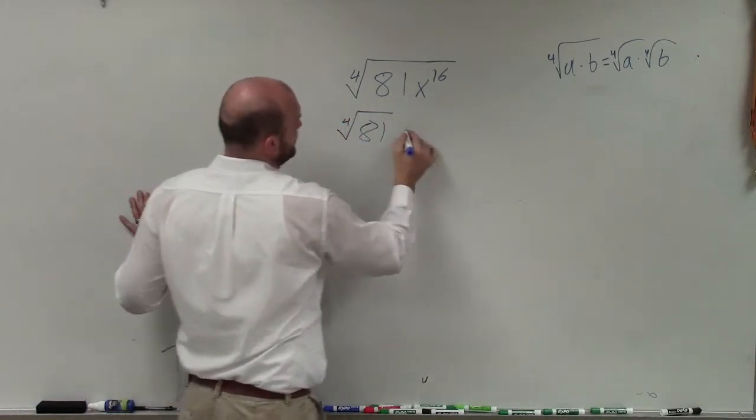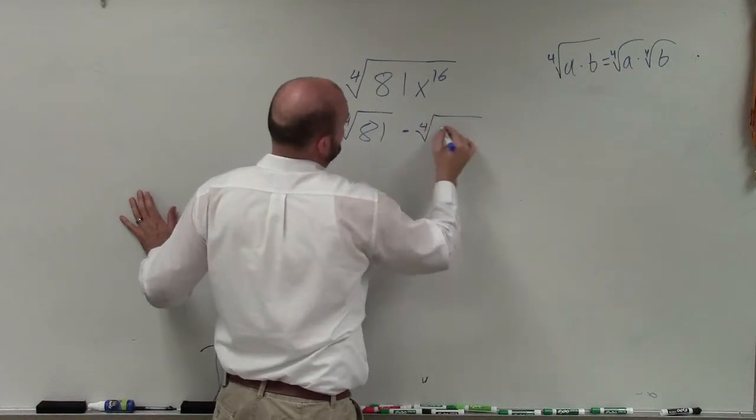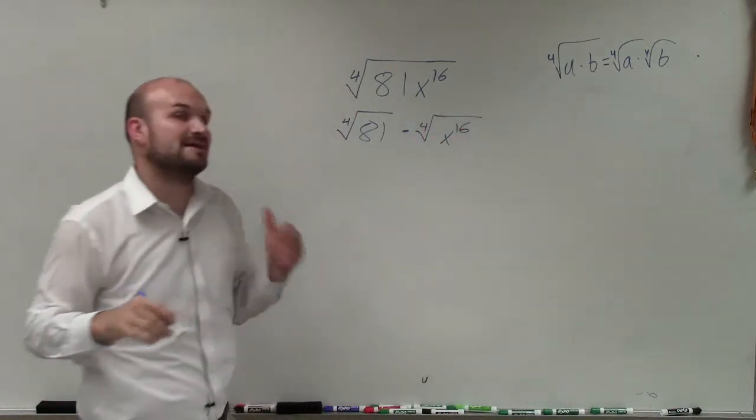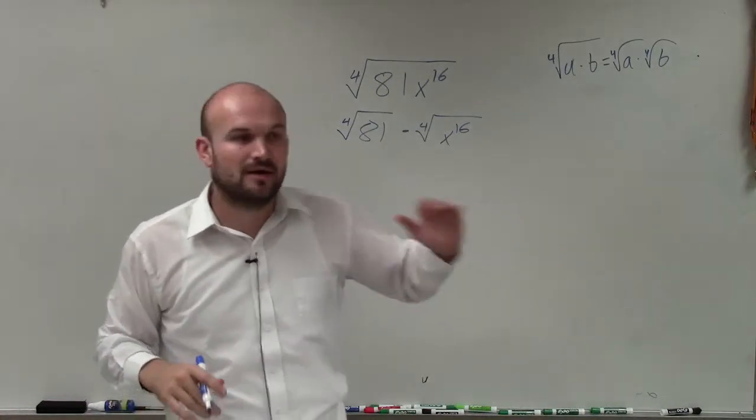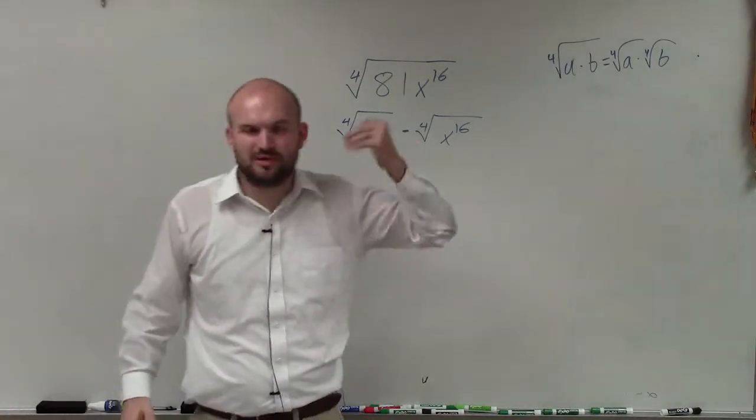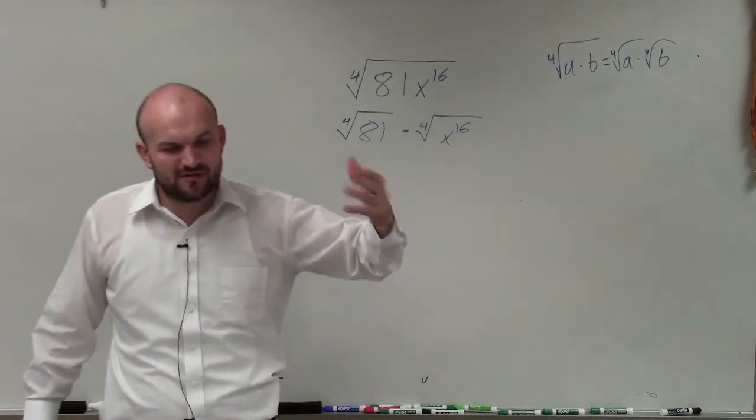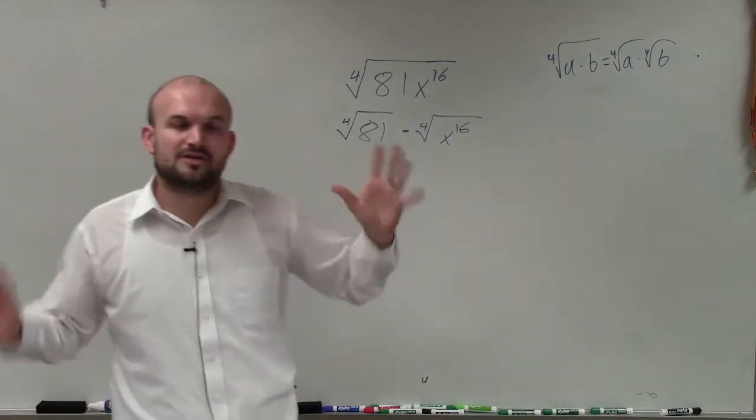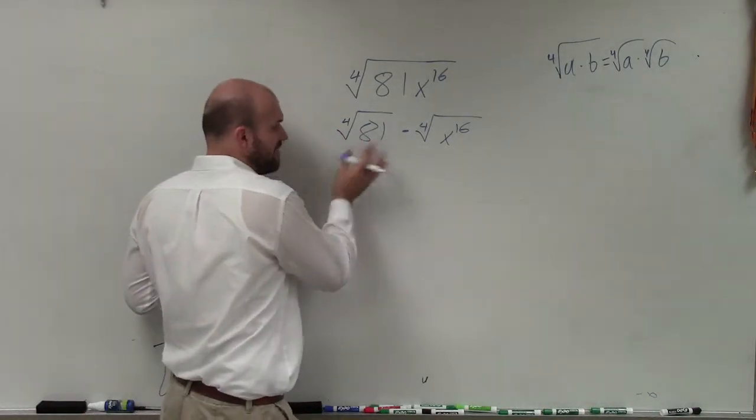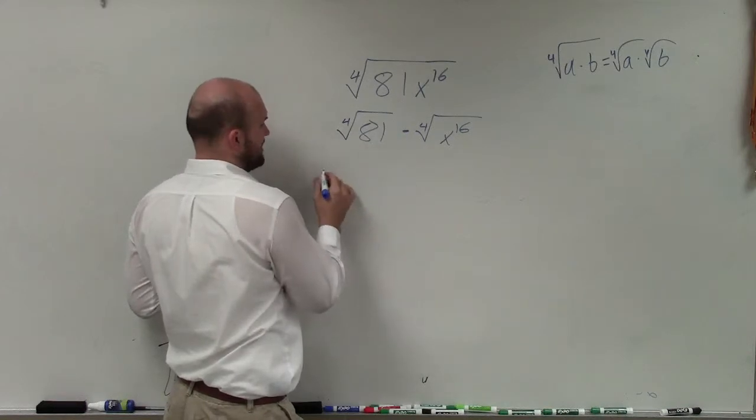Now, when dealing with numbers, unless you are able to identify what number multiplied by itself four times gives you 81—which square roots sometimes people know because we use them so often, but fourth roots might not become so familiar with you—so a lot of times I say factorize it. Just break it down into its prime factorization.